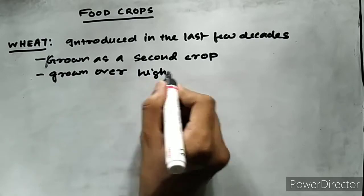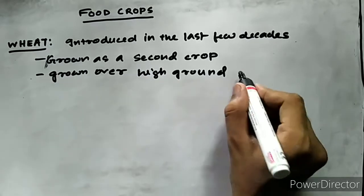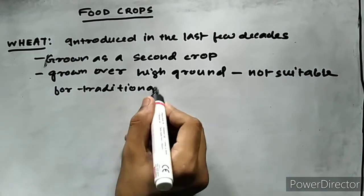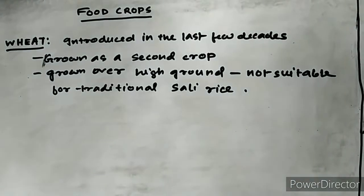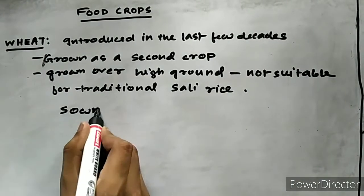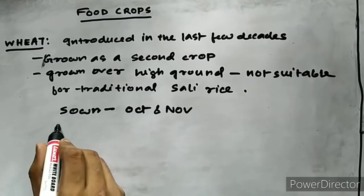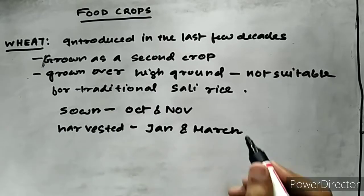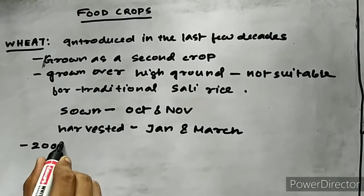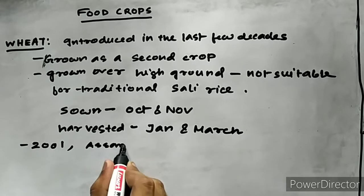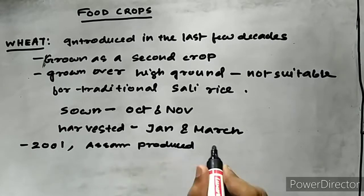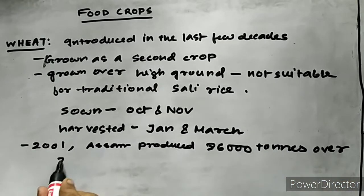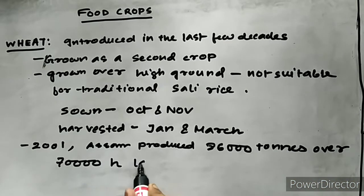The crop is generally grown over high ground which is not generally used for aman or sali, which is our traditional crop. The seeds are sown in October to November and harvested in January to March. In 2001, Assam produced about 86,000 metric tons of wheat over 70,000 hectares of land. This yield per hectare was 1,219 kg, so the production is very low.